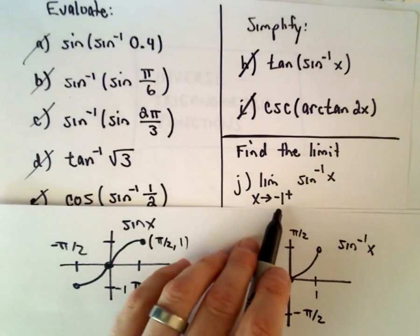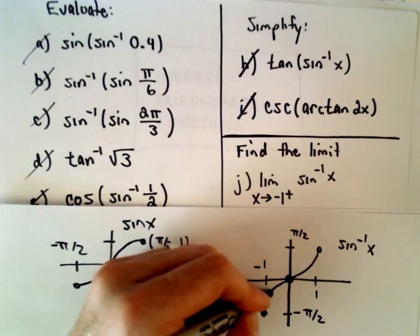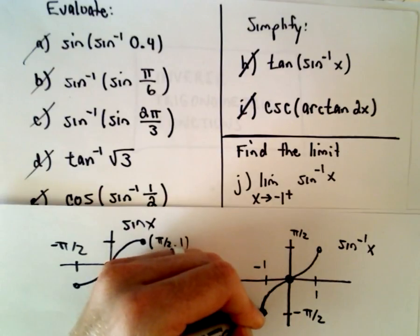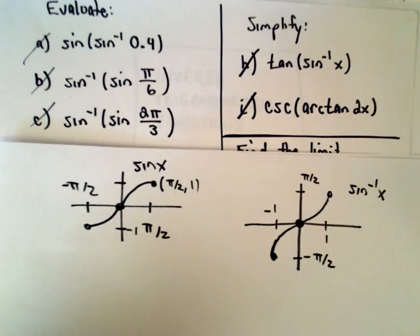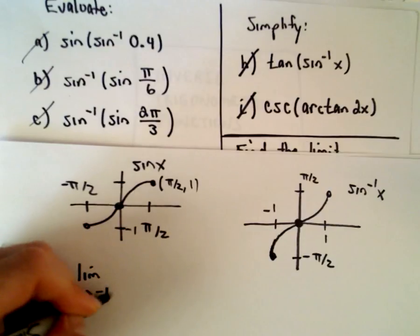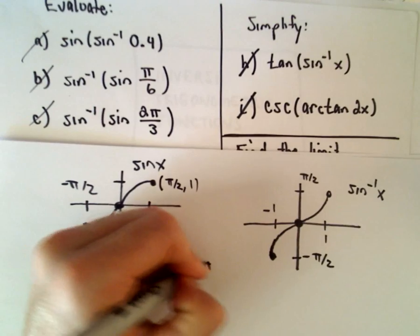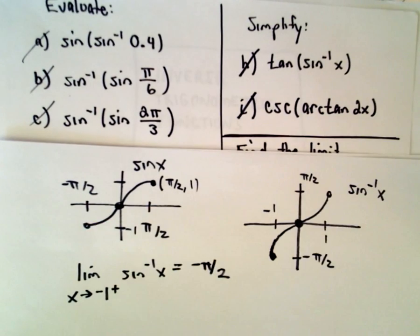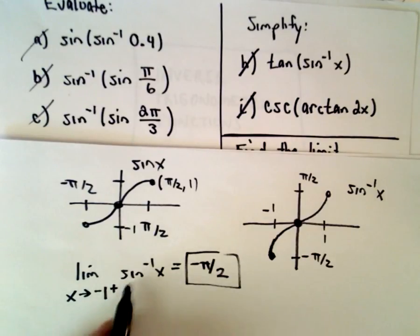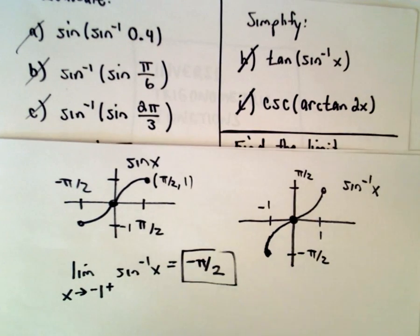All we're doing is approaching negative 1 from the right side. If we approach negative 1 from the right side, the y values are simply getting closer and closer to negative pi over 2. So the limit as x approaches negative 1 from the right of inverse sine x equals negative pi over 2. You're just evaluating the inverse sine of negative 1, which is negative pi over 2.